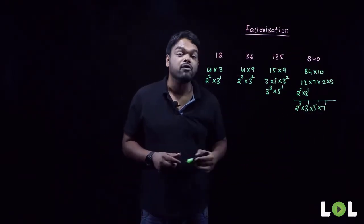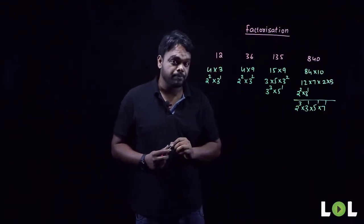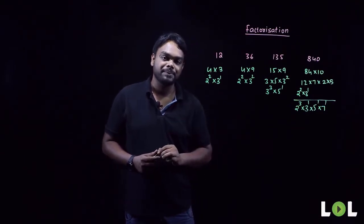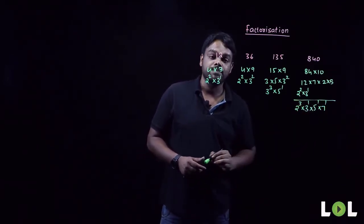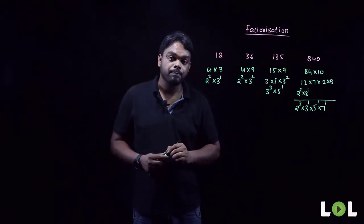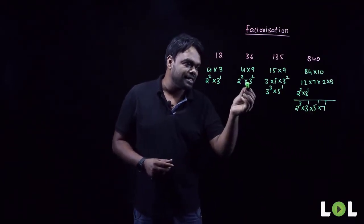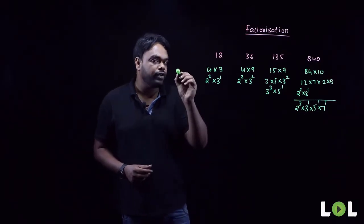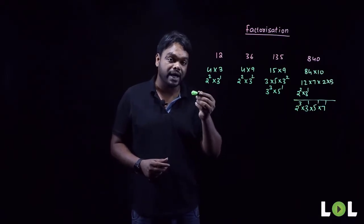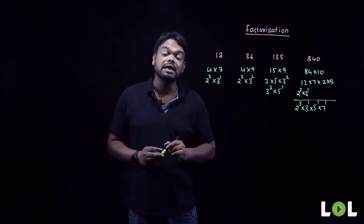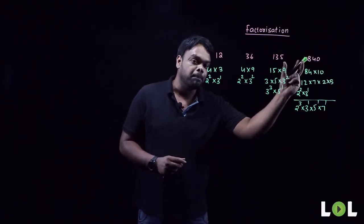So factorization means representing a number as a product of powers of prime numbers — all the bases are always prime. Every composite number is made up of one or more prime numbers; for example, 4 is 2 squared. Prime numbers are the building blocks of all composite numbers, and through factorization we check how many prime numbers are used to construct a particular number.